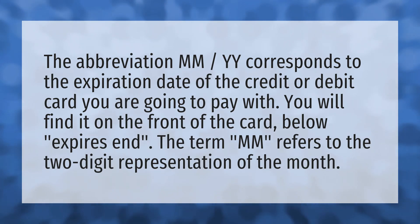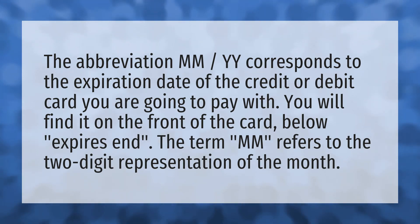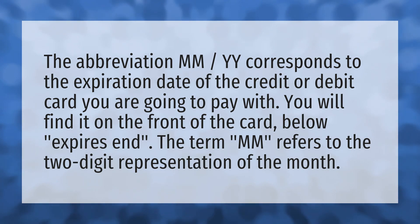The abbreviation MM/YY corresponds to the expiration date of the credit or debit card you are going to pay with. You will find it on the front of the card, below 'expires end.' The term M refers to the two-digit representation of the month.